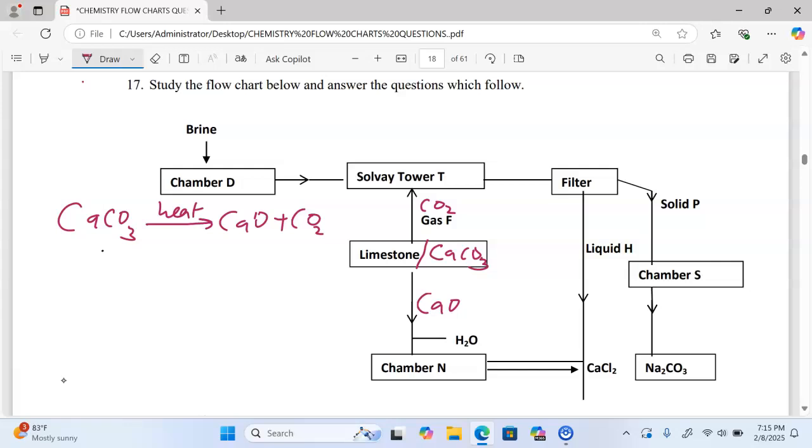Carbon dioxide gets into the Solvay tower where we have brine getting in. I want to assume there is ammonia already inside, such that we have a mixture of ammonia and brine, which is sodium chloride, plus the carbon dioxide that is getting into the Solvay tower, and water.